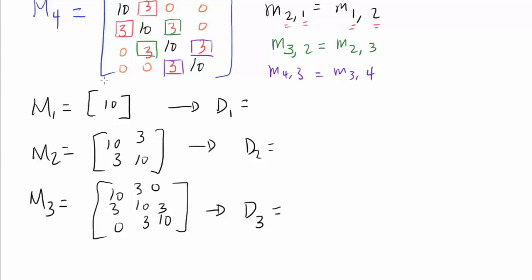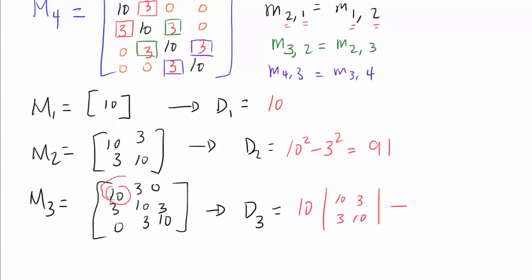The determinant of matrix 1 is 10. The determinant of the second matrix is 10 squared minus 3 squared, which is 91. For the third matrix, expanding on the first row: that's 10 times the determinant of [[10,3],[3,10]] minus 3 times the determinant of [[3,3],[0,10]]. We see that [[10,3],[3,10]] is D2, which is 91. And the second determinant is 3 times 3 times 10, giving 9 times 10 equals 90. So D3 is 10 times 91 minus 90, which is 910 minus 90, equals 820.